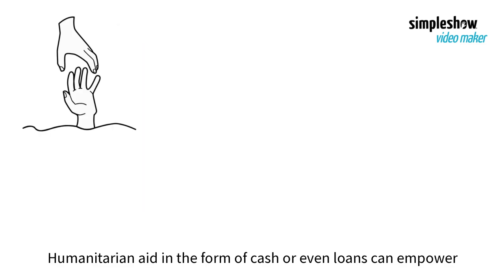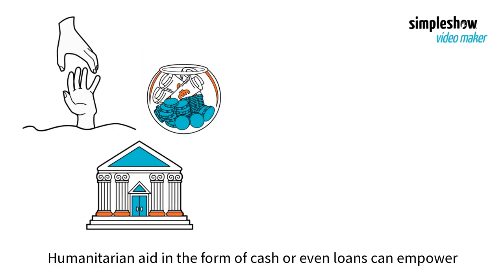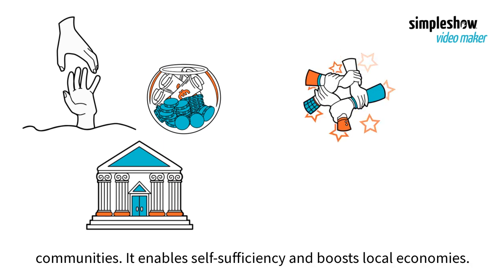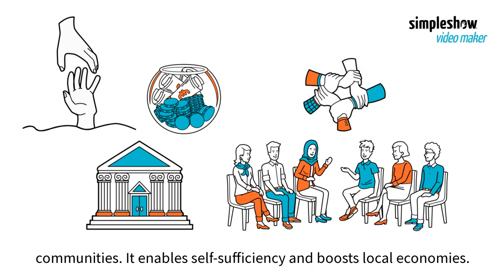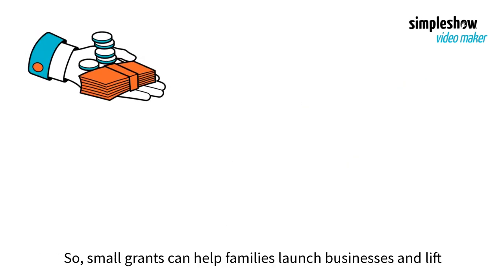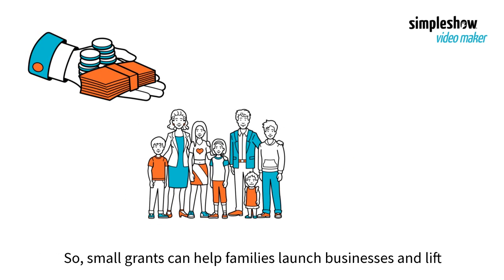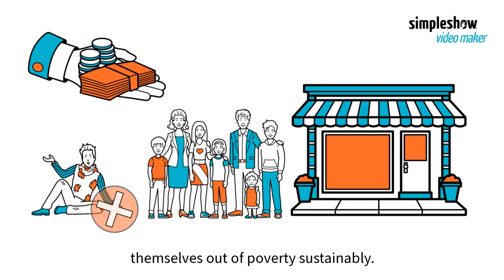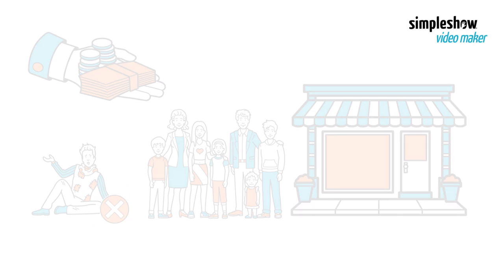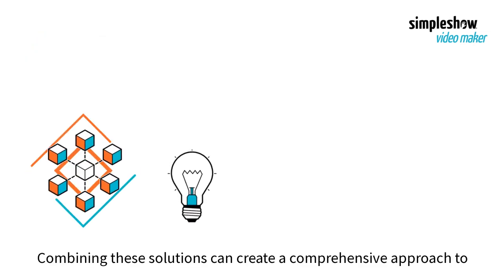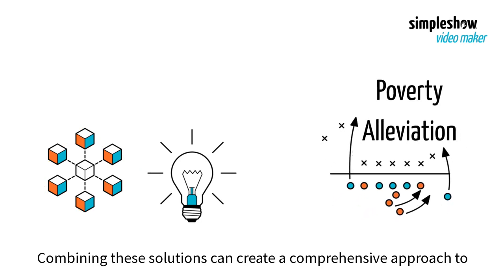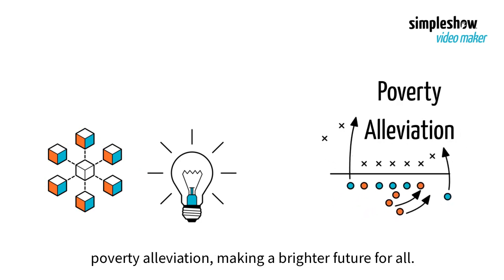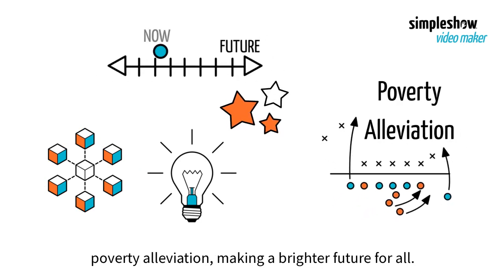Humanitarian aid in the form of cash or even loans can empower communities. It enables self-sufficiency and boosts local economies. Small grants can help families launch businesses and lift themselves out of poverty sustainably. Combining these solutions can create a comprehensive approach to poverty alleviation, making a brighter future for all.